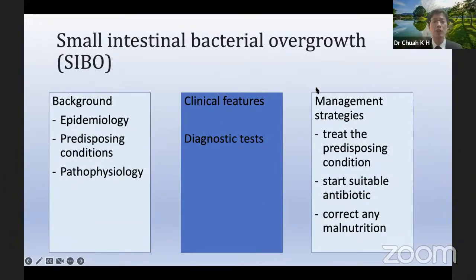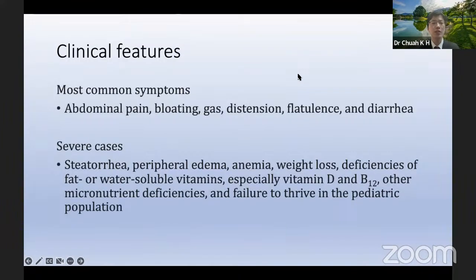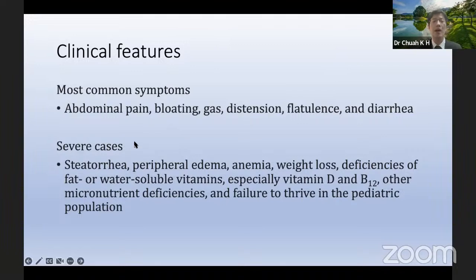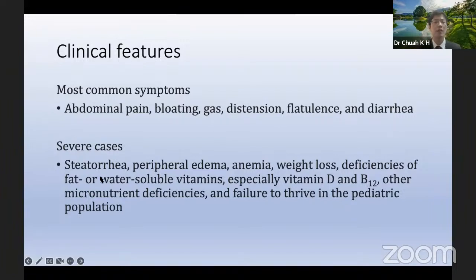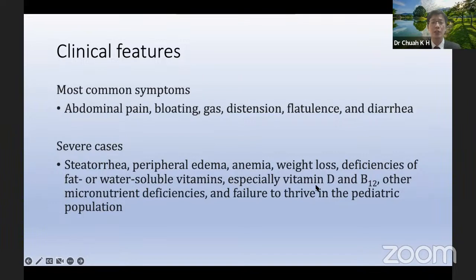Regarding clinical features and diagnostic tests: the most common symptoms are abdominal pain and bloating, together with gas, distension, flatulence, and diarrhea. Per various guidelines including the American College of Gastroenterology, bloating is among the most common symptoms. Although symptoms are very nonspecific — with no pathognomonic sign or symptom characterizing SIBO — any of these symptoms can represent SIBO. In severe cases, patients may have malnutrition, steatorrhea, peripheral edema, anemia, weight loss, deficiency of fat- and water-soluble vitamins, especially vitamin D, B12, and other micronutrients, and failure to thrive in pediatric populations.